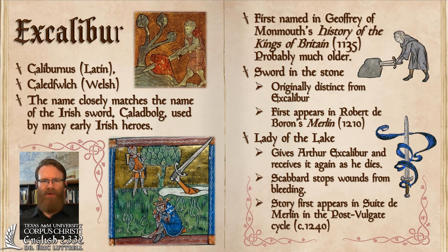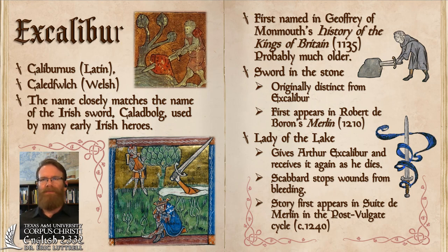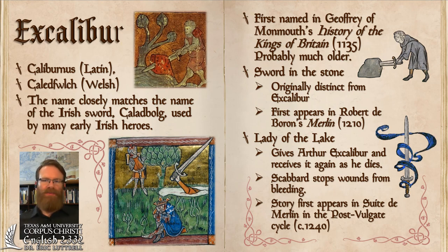The sword Caledfulch itself seems to resemble the name for an Irish mythological sword called Caladbolg, used by many early Irish heroes including Cú Chulainn. In Geoffrey of Monmouth's narrative, there's no explanation of where the sword came from or what happens to it in the end. In the sword-in-the-stone story, Arthur has been raised anonymously because Merlin took him after enabling Uther Pendragon, the former king, to sleep with a woman who was married to a rival king — and Merlin knew Uther was doomed.